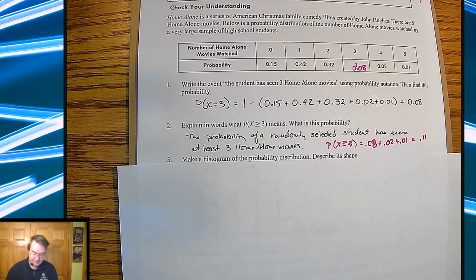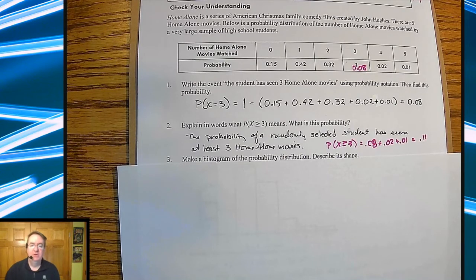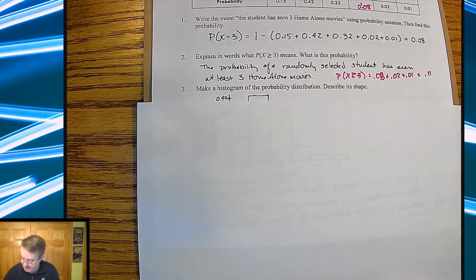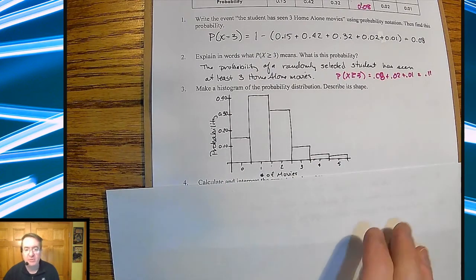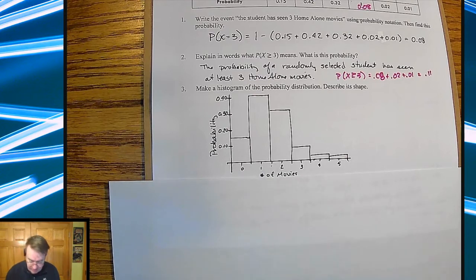But you know, back in my day, we also had cars with 10 miles per gallon. So not everything was great back in the 80s. Make a histogram of the probability distribution and describe its shape. Pretty straightforward. In terms of describing the shape, this one is definitely skewed right.